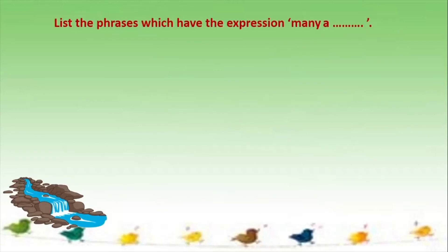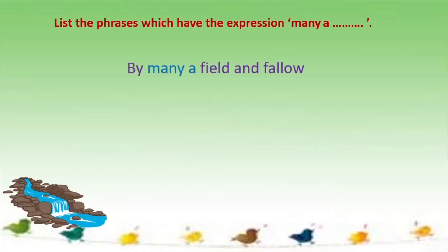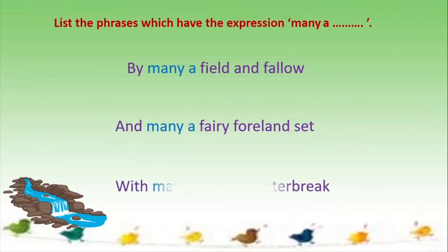You have one more exercise which asks you to list the phrases which have the expression 'many a.' From the poem you have: 'By many a field and fallow,' 'And many a fairy foal and set,' and 'With many a silvery water break.' If you do not find other expressions in the poem, you can look in any newspaper or magazine and try to pick up sentences where this particular phrase is used.